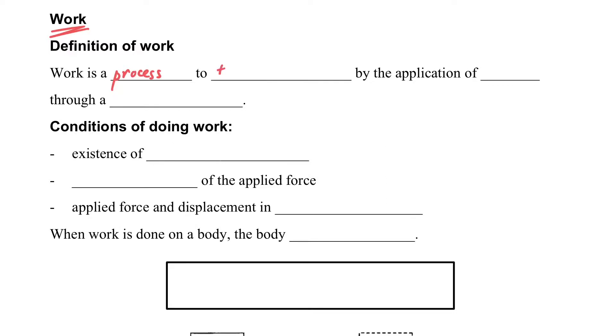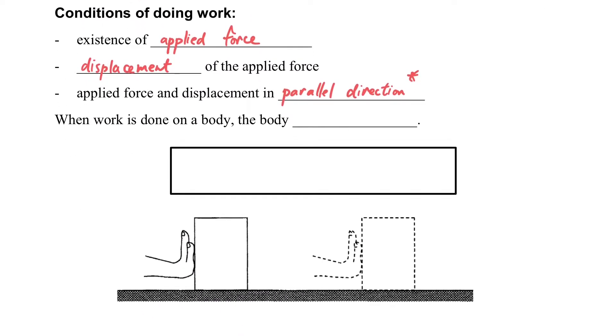So what is work? Work is a process to transfer energy by applying force through a displacement. So this is the work in physics. What are the conditions for doing work? There must be an existence of the applied force and also displacement. And also the direction of both are important. The applied force and displacement should be in parallel direction in order to do work.